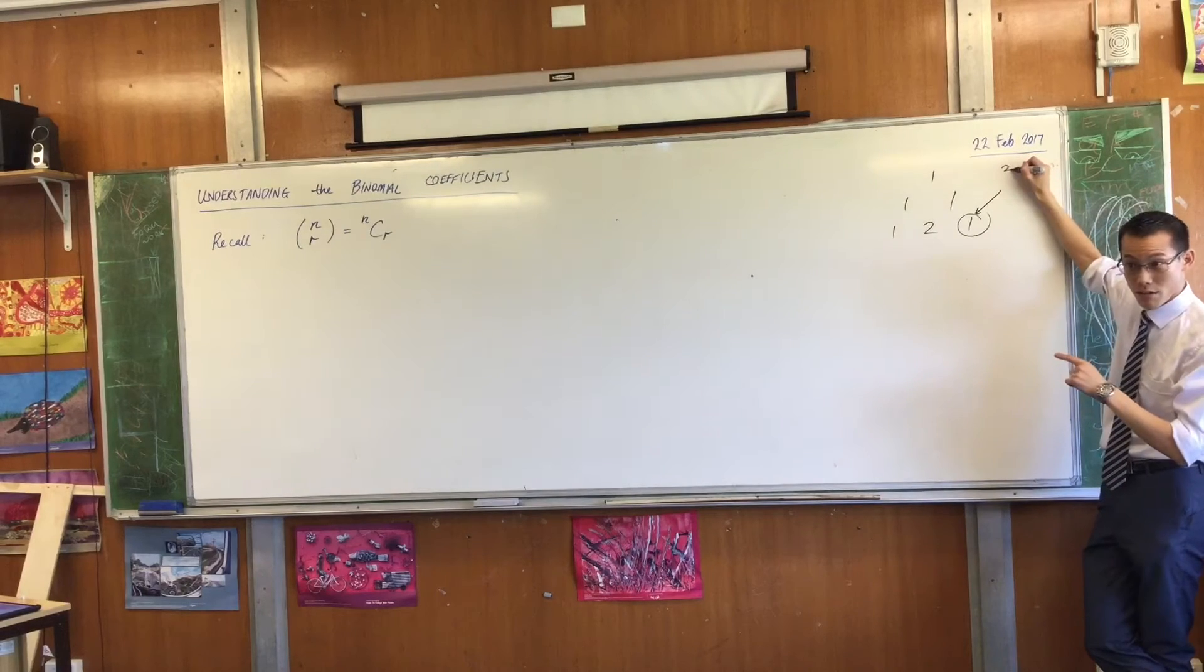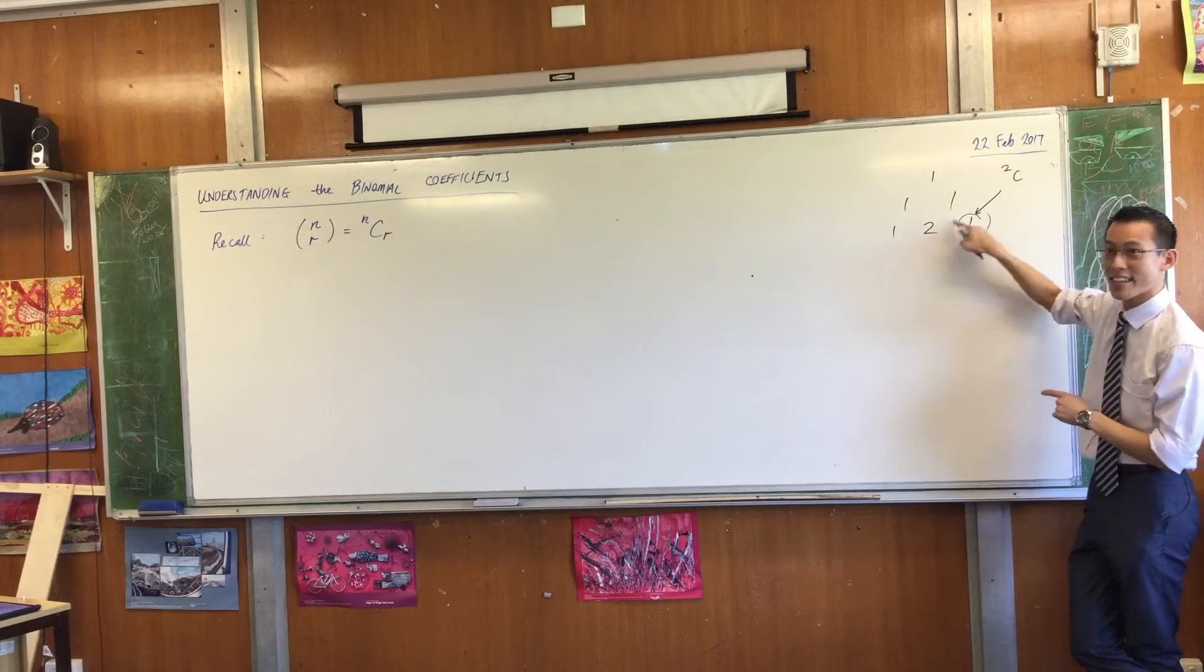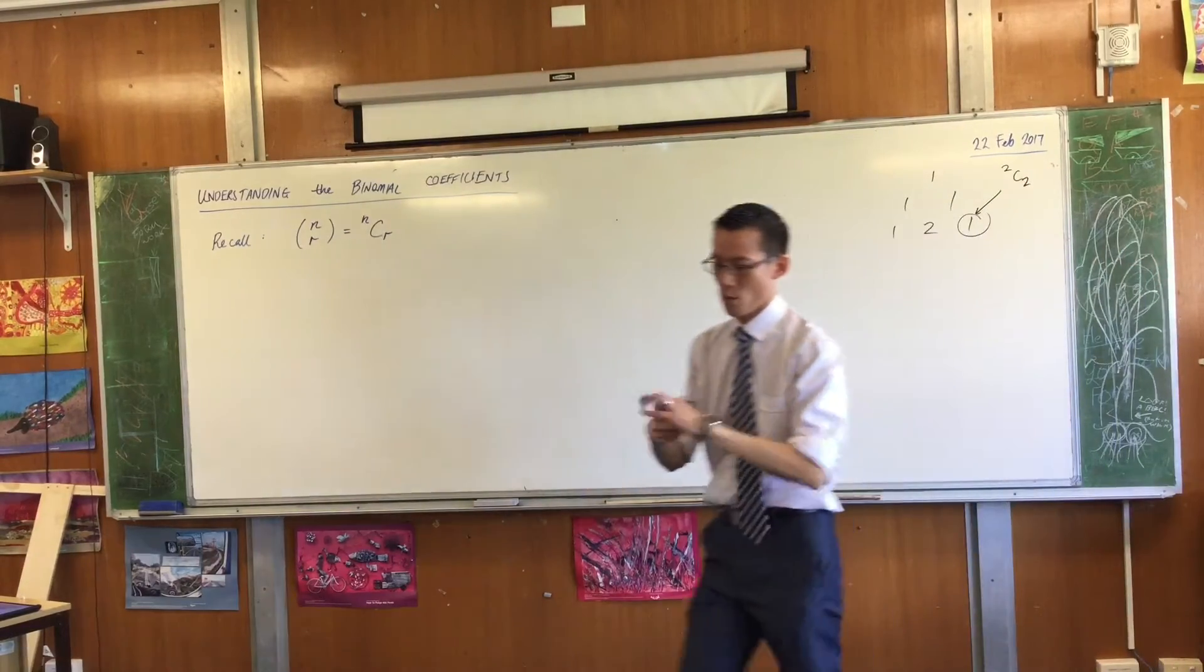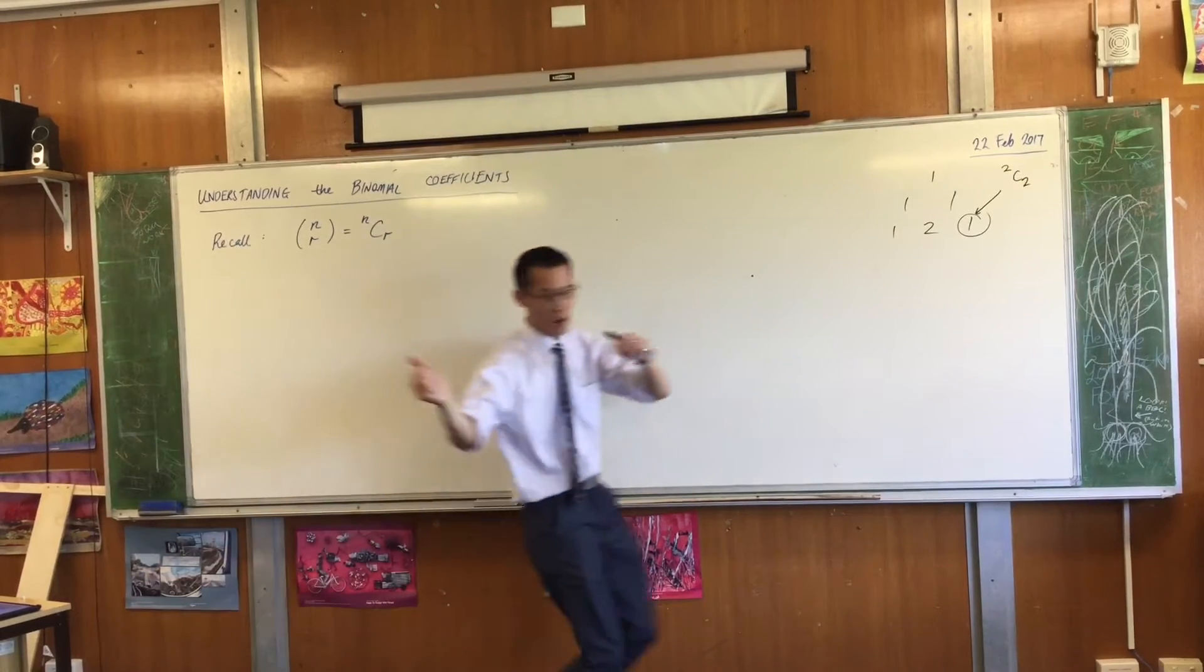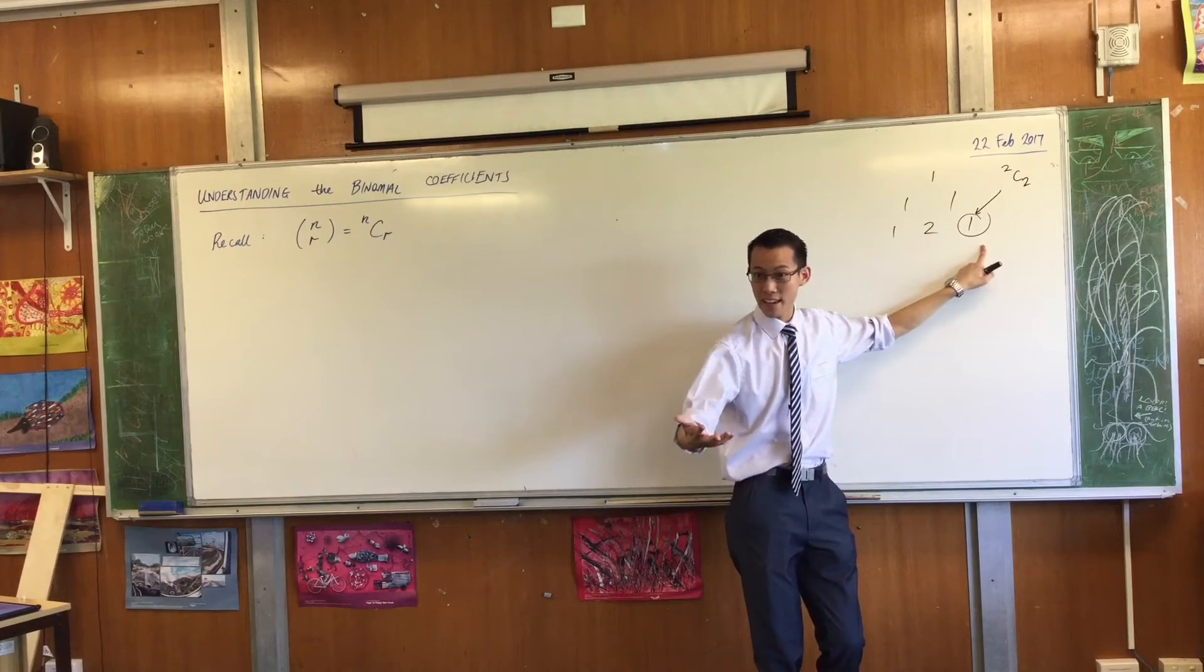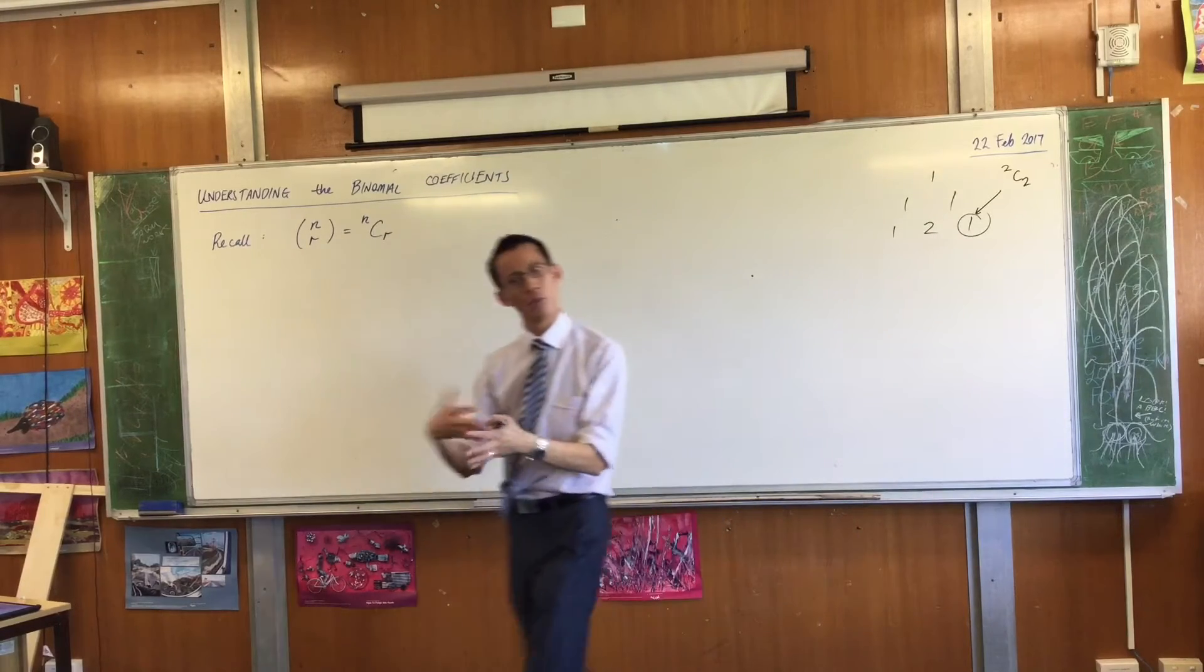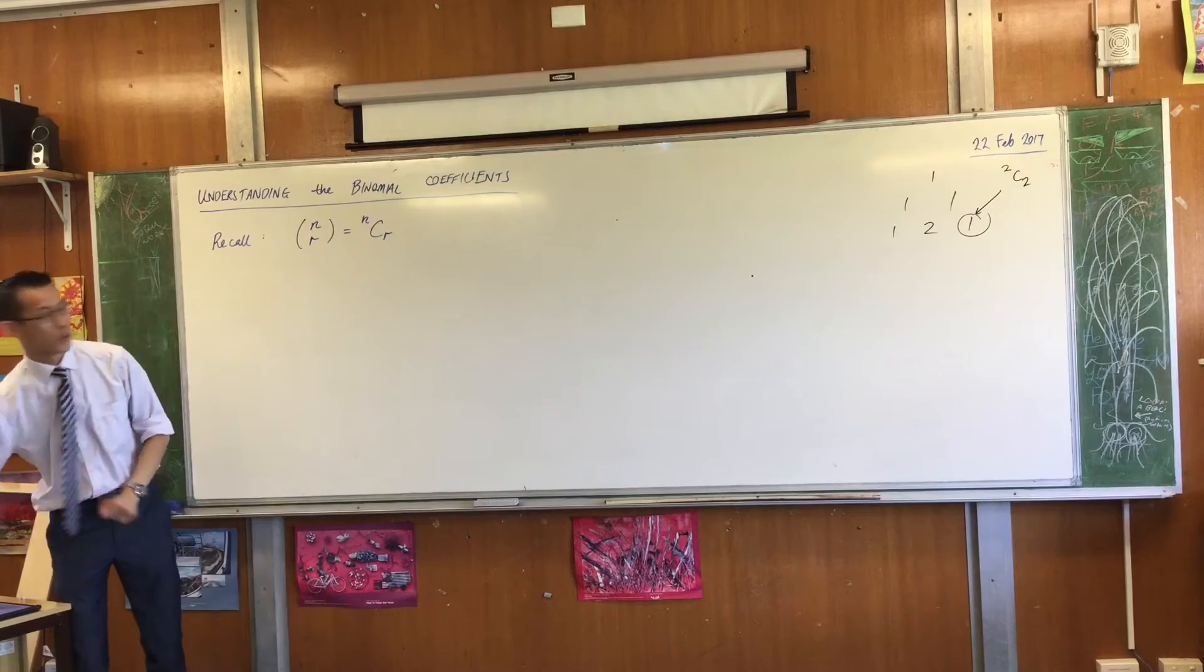It's in the second row and it's the zero, first, second term. So it's 2C2. And hopefully you remember, one of the things we looked at was NC0, any row, zeroth term, is always equal to NCN, which is also always equal to 1. So we looked at that in the properties of binomial coefficients. Alright, so far so good.